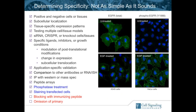For immunofluorescence in particular, and sometimes for Western blotting, we'll use subcellular localization as an indicator of specificity. If you have a cytoplasmic protein and it stains the nucleus, you probably don't have a specific antibody. We'll also use cell fractionation to test antibodies by Western blot. Using agonists, inhibitors, or growth conditions to shift the protein around is also critically important to validating an antibody.